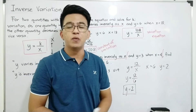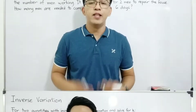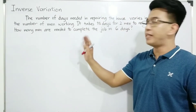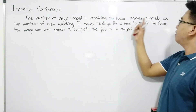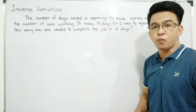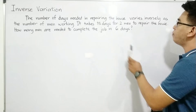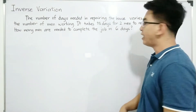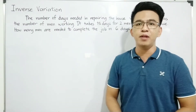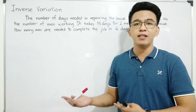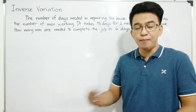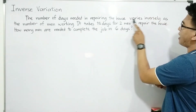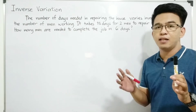In the next part of our video, we will solve more problems about inverse variation. Now, let's have the third problem. The number of days needed in repairing the house varies inversely as the number of men working. It takes 15 days for 2 men to repair the house. How many men are needed to complete the job in 6 days? This is a work problem, and since it says 'varies inversely,' this problem is under inverse variation.